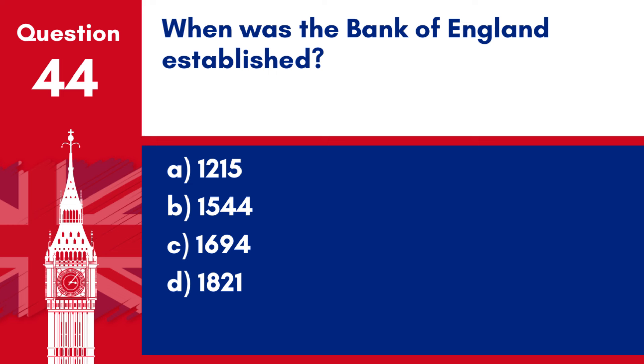Question 44. When was the Bank of England established? a. 1215. b. 1544. c. 1694. d. 1821.